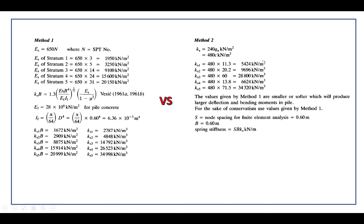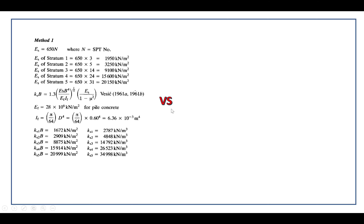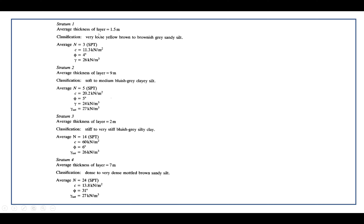If you use Method 2, Ks1 equals 5,422 kN per cubic meter, which is within the recommended range — the minimum for loose sand is 4800. You can check Ks for layer 1, which is described as very loose yellow-brown sand.